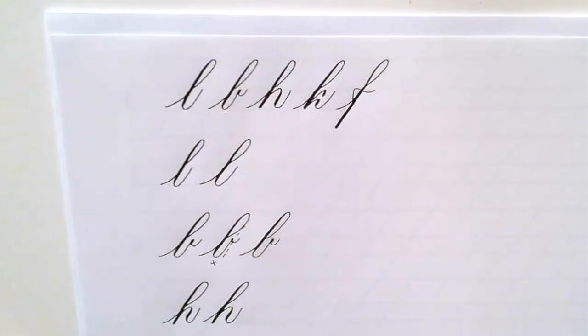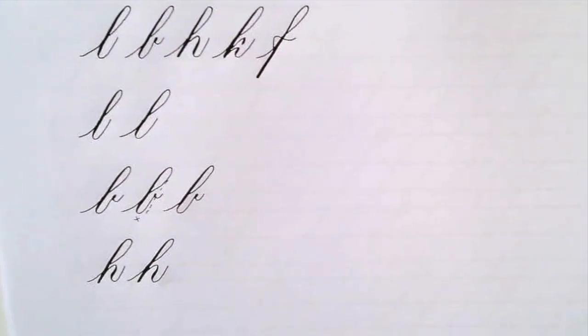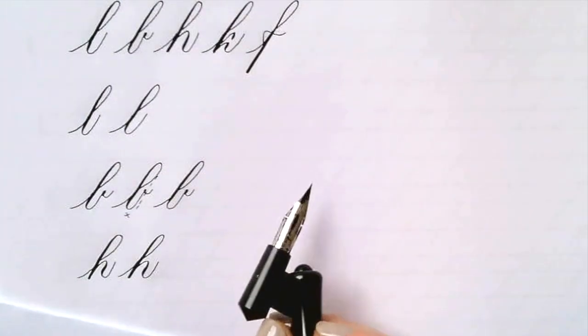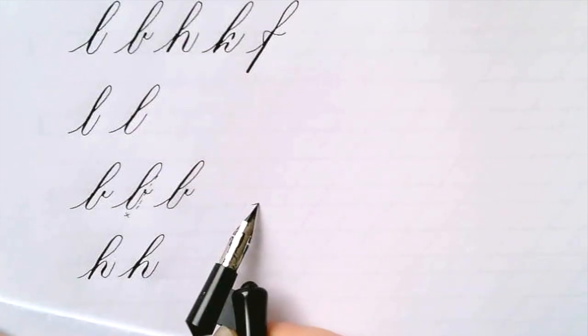The transitions from hairlines to heavier down strokes, you want to make sure that you always start getting heavier after the curve, and especially in these overturned loops, you want those to be gradual.